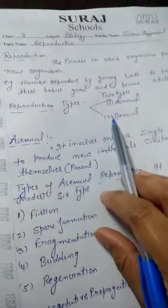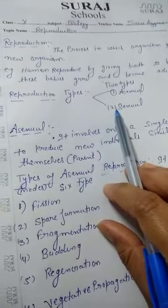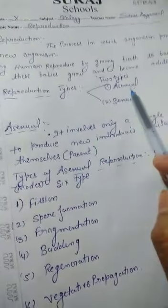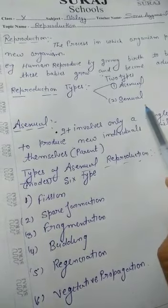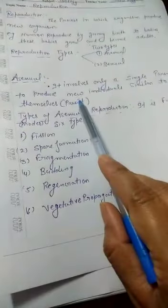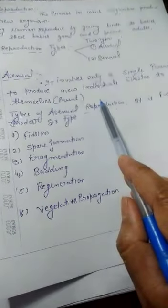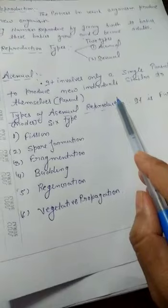Students, what are the types of reproduction, and how many types are there? Reproductions are basically of two types: the first one is asexual reproduction, and the second one is sexual reproduction. First of all, we will discuss asexual reproduction. Asexual reproduction involves only a single parent to produce new individuals similar to themselves, similar to the parents.